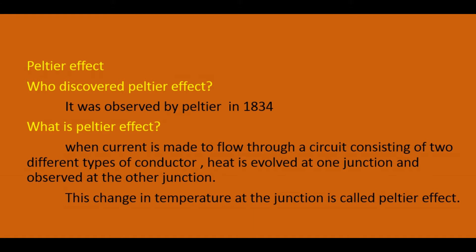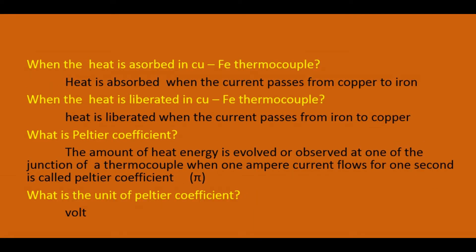In the Peltier effect, we use a copper and iron thermocouple. Heat is absorbed when the current passes from copper to iron (Cu to Fe). When the current passes from iron to copper (Fe to Cu), heat is liberated.